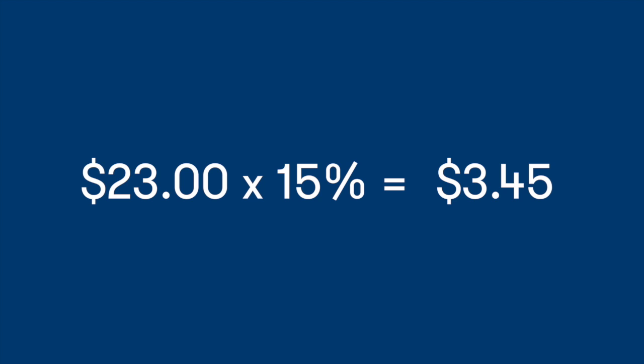But suppose you try to figure out later what the tip was by looking only at the total. You can't take 15% of the $23, subtract it out, and end up back at $20, because 15% of $23 is $3.45, not the original $3 you tipped. You're trying to take percentages on different baselines.